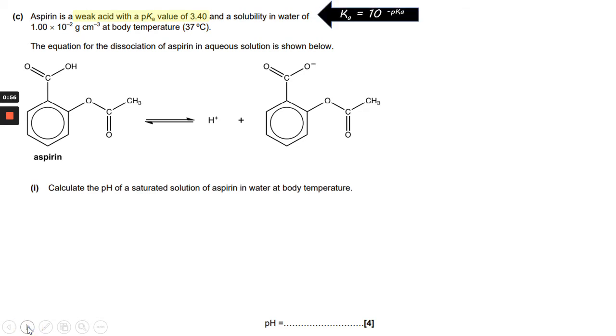That means that you can work out the Ka by doing 10 to the minus pKa. So we can park that there and come back to it a little bit later. The next thing to do is to work out what a saturated solution actually means.